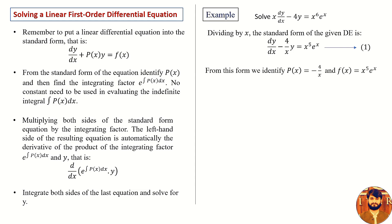From this form we identify P of x. In the standard form, the function of x in product with y gives P of x. So P of x equals to minus 4 upon x, and the right side of the equation gives F of x, which is x to the power 5 e raised to the power x. Observe that P of x and F of x are continuous on the open interval 0 to infinity.